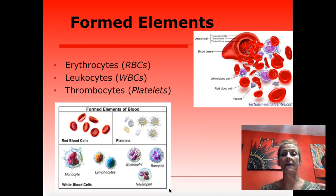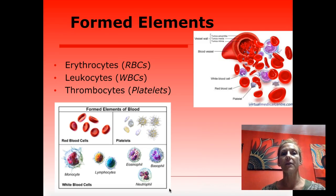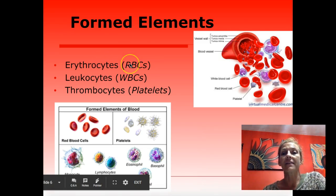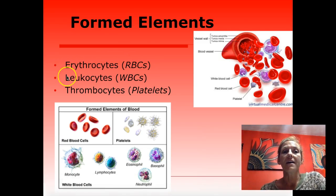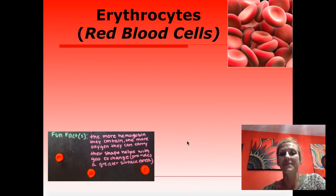Plasma is the liquid portion of the blood; everything else falls under the category of formed elements. Formed elements are cells or cell fragments: erythrocytes are red cells, leukocytes are white cells, and thrombocytes are your platelets — clotting cells that are not whole cells, just fragments. You should know both the scientific name and the common name. Erythro means red, leuko means white, thromb means clot, and -cyte means cell.